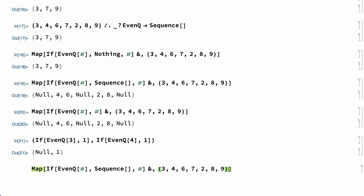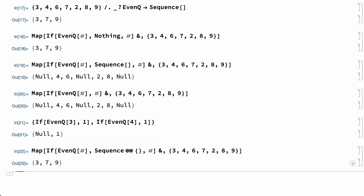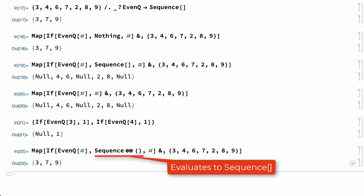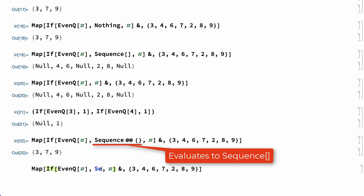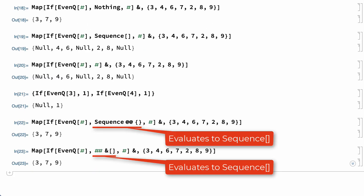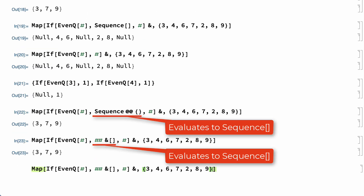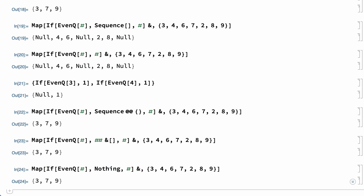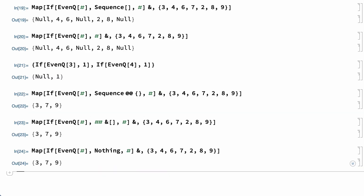There are various tricks for getting Sequence to work in this example by using something that evaluates to an empty sequence rather than using the empty sequence directly. For example, this input also drops all of the even numbers from the list, as does this input. The same input with Nothing works because Nothing does not affect the If function. Nothing only gets dropped when it is an element in a list, and so in examples like this one, it provides a straightforward and less seemingly tricky way of getting the desired effect.